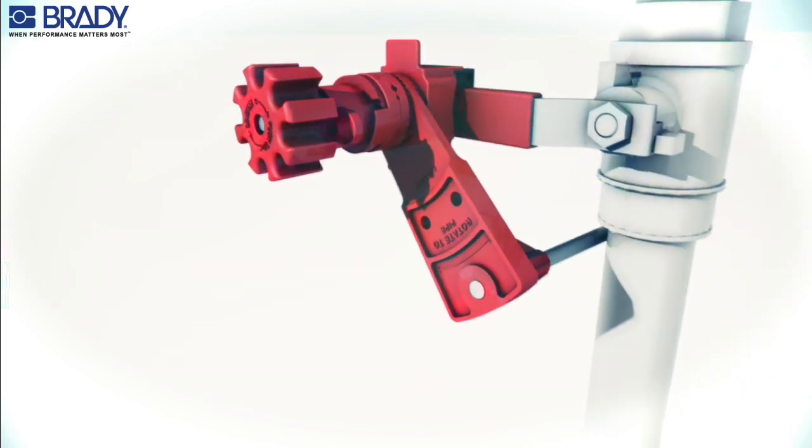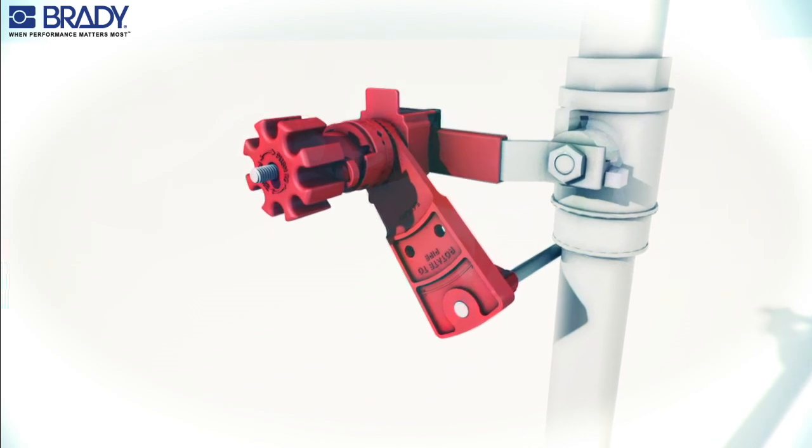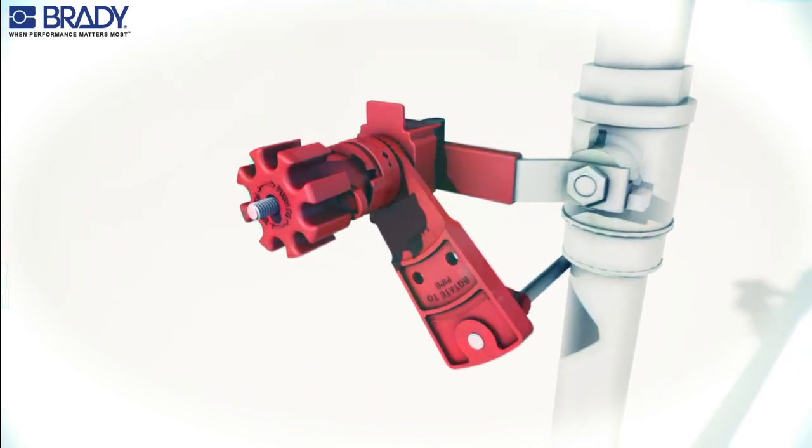Rotate the blocking arm against the pipe in the direction of the valve rotation. Turn the handwheel clockwise, tightening both the clamp and the blocking arm.